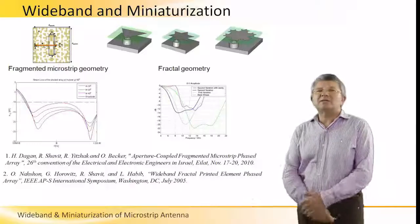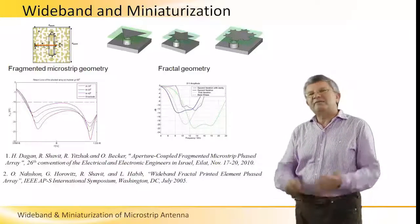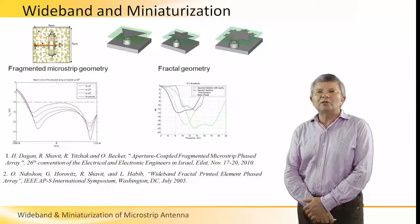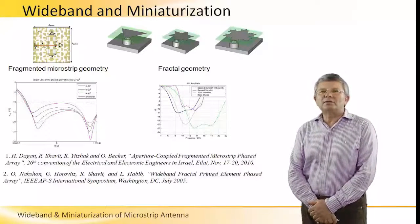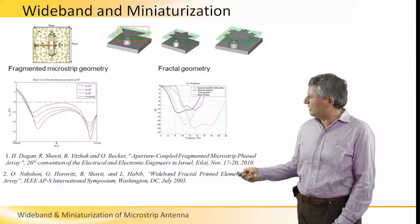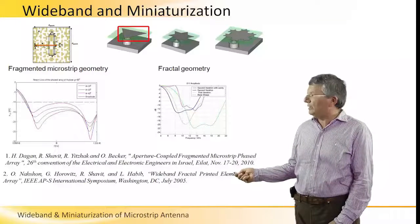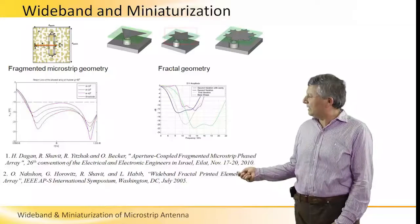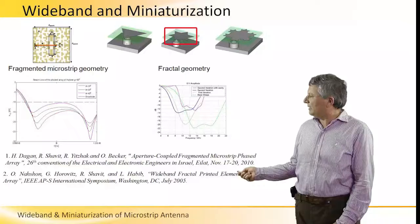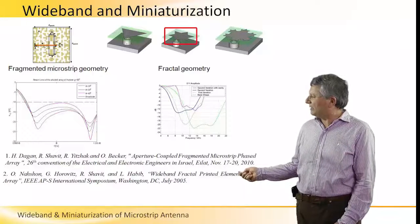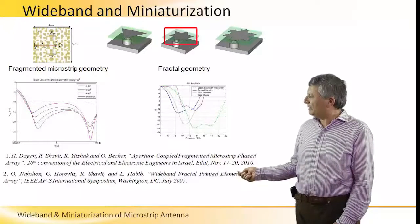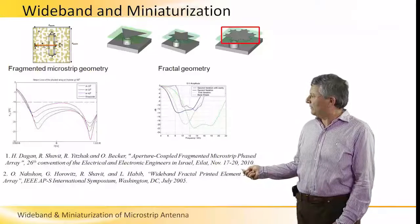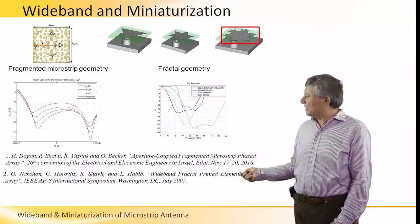Fractal geometry is a family of functions that evolves with the order of the fractal. For instance, if we start with a basic shape like a triangle, we obtain one resonant frequency. As we increase the order of the fractal to, let's say, a David star shape as seen here, we obtain another resonant frequency. And if we go further with this type of fractal order, we obtain yet another frequency.